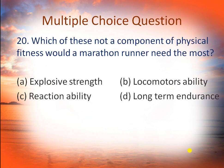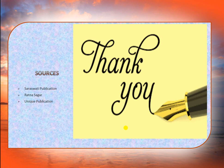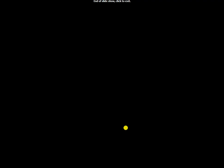The last question: which component of physical fitness would a marathon runner need the most? Options are A: explosive strength, B: locomotor ability, C: reaction ability, and D: long-term endurance. The right answer is D — long-term endurance — because a marathon runner runs for a longer time period and therefore needs long-term endurance. Thank you so much. These were the MCQs of the third unit.